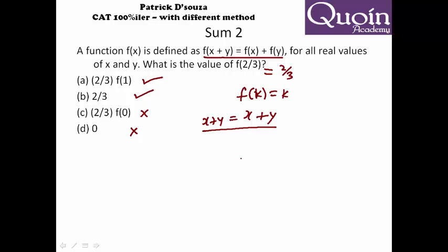If I look at it properly, I can make out that even if I take f(k) as 2k it should satisfy. In which case f(x+y) will be 2x+y, f(x) will be 2x, f(y) will be 2y—it satisfies. In which case f(2/3) will be 4/3. This will not satisfy, you can make out that answer has to be option A.